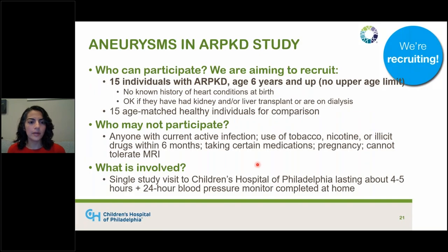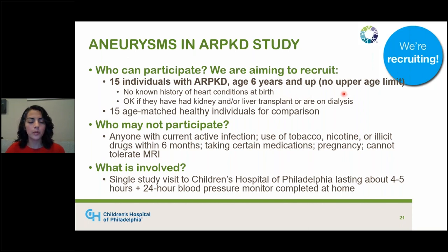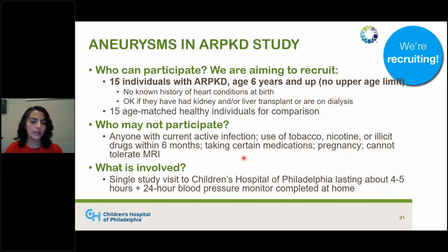For this study, we aim to recruit 15 individuals with ARPKD, age six and up — six being the youngest we think someone could lie still enough for an MRI. There is no upper age limit, so adults with ARPKD are welcome. We ask that there are no heart conditions independent of ARPKD, and it is okay if the individual has had a kidney and/or liver transplant or is currently on dialysis. We'll also recruit age-matched healthy individuals for comparison. Exclusions include active infection, tobacco or drug use, certain medications, pregnancy, or inability to do MRI due to claustrophobia or metals in the body.